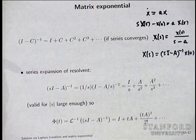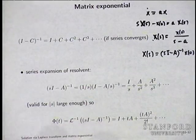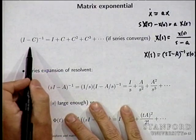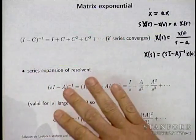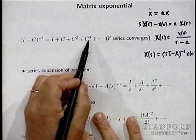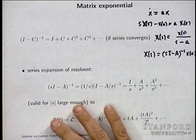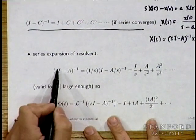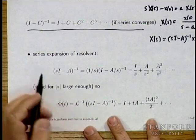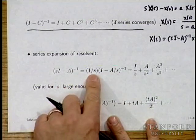Using the power series, SI minus A inverse equals (1/S)(I plus A/S plus (A/S)² + ...), which simplifies to I/S plus A/S² plus A²/S³ and so on. This is the expansion of the resolvent as a Laurent series for large S. Now let's take the inverse Laplace transform term by term.